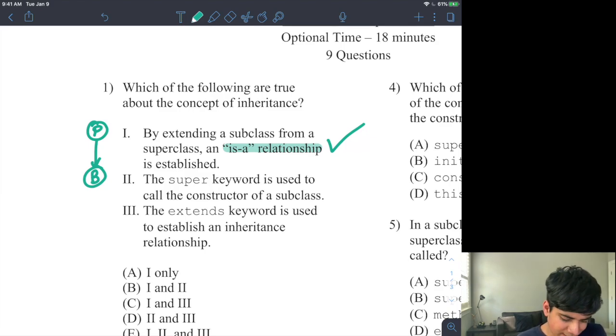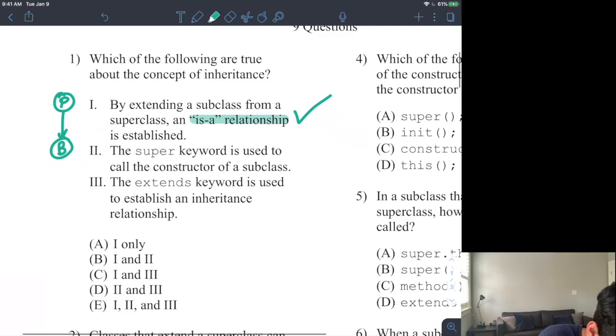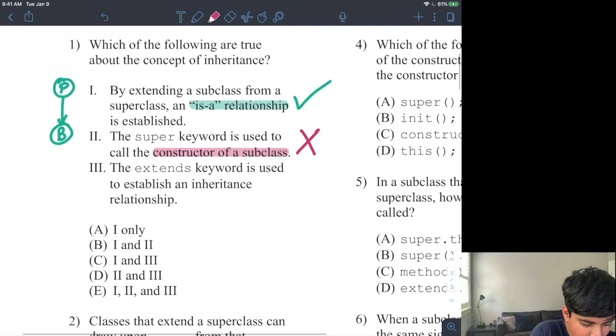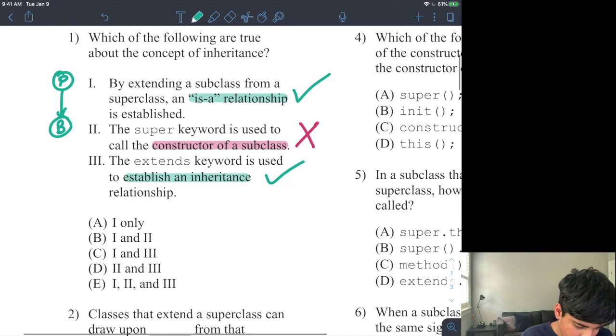And then the next thing, it says the super keyword is used to call the constructor of a subclass. So the key thing here that is incorrect about this is constructor of a subclass. In fact, it calls the constructor of the superclass. So therefore, two is incorrect. And then it says number three, the extends keyword is used to establish an inheritance relationship. That is definitely true.